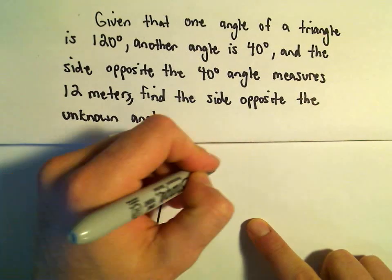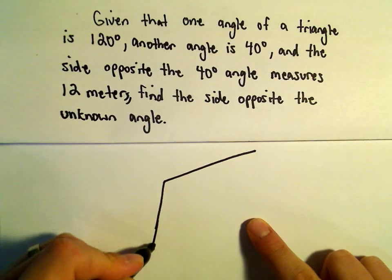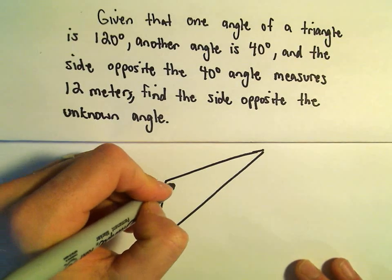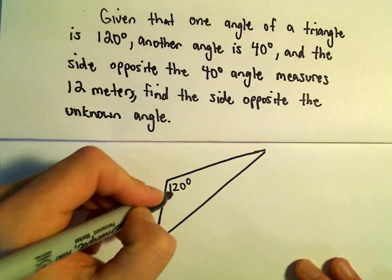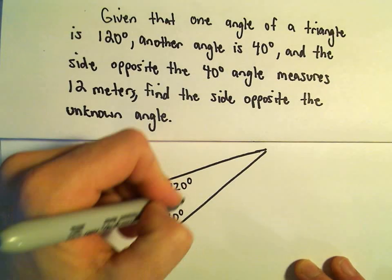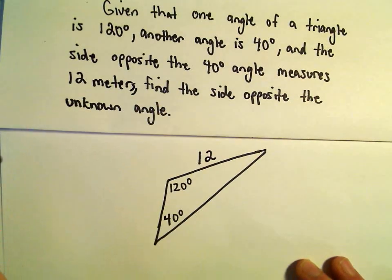I'm going to make a little picture here, try to make it somewhat to scale. So here's our 120 degree angle. This will be our 40 degree angle. The side opposite the 40 degree angle has length 12.